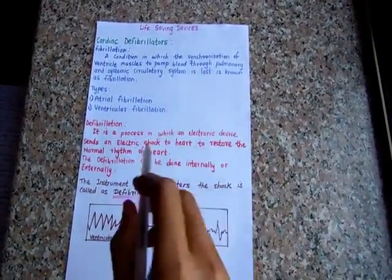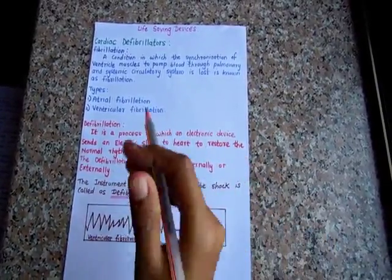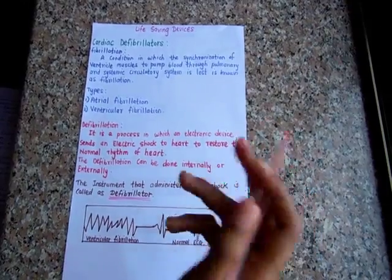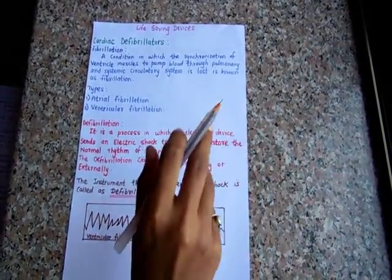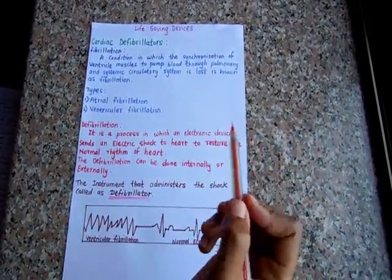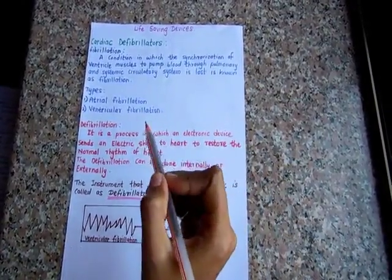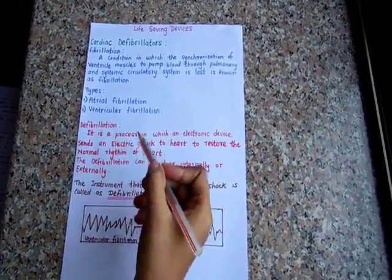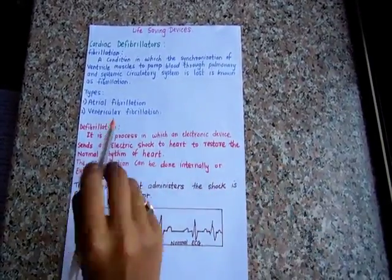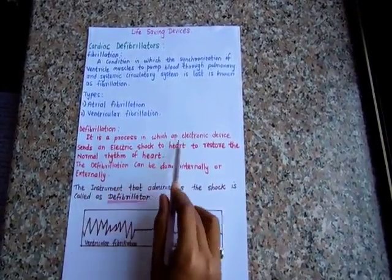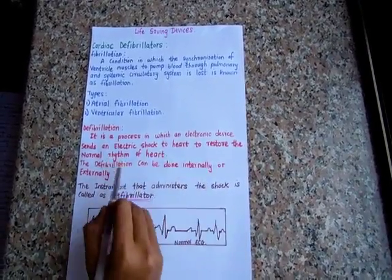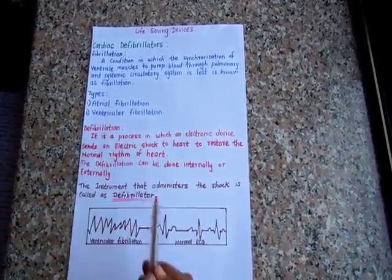We have seen one of the mechanical methods for avoiding the fibrillation is that massaging of the heart which is carried out over the past few years, but it is not that successful. The most successful method of making defibrillation is use of giving an electric shock to the area of heart. The process in which an electronic device sends an electronic shock to heart to restore the normal rhythm of heart is called defibrillation.